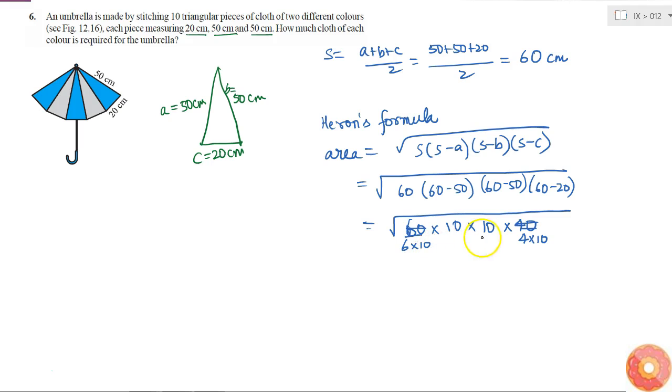So here I have 10 into 10 into 10 into 10 which is 10 to the power 4. So square root over 10 to the power 4 is 10 square multiplied by square root over 4 is 2 multiplied by square root over 6.